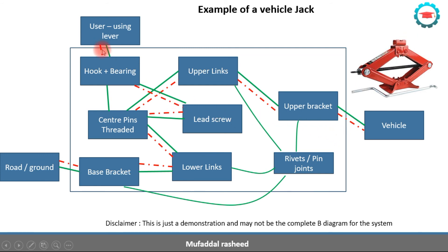From this diagram we can understand the full load transfer path: the user applies torque on the hook, which applies it to the lead screw, causing it to rotate. Because of the rotation of the lead screw, there is linear motion of the center pins — these pins move inward due to a force impinged by the screw onto the pins. These pins then impinge a force on the links, which causes the top bracket to rise and produces the jacking effect on the vehicle.